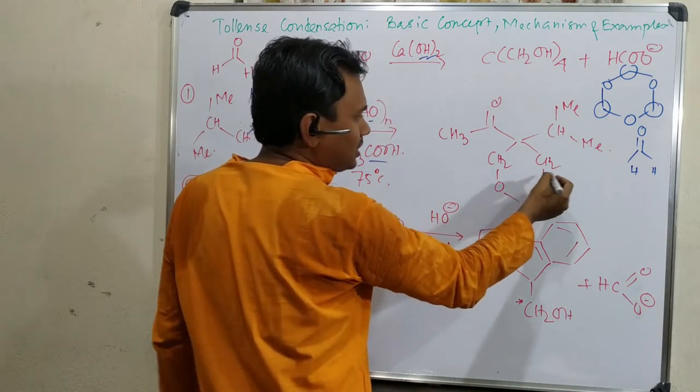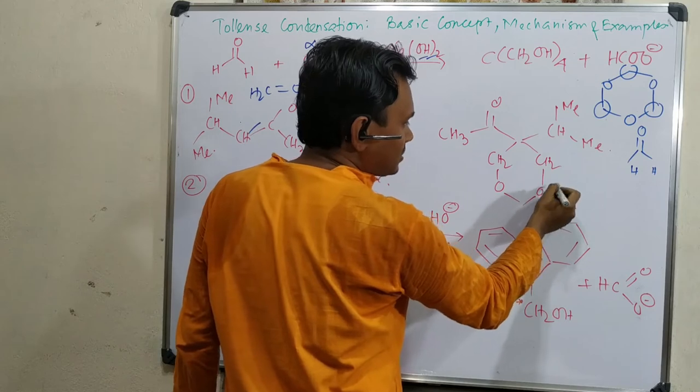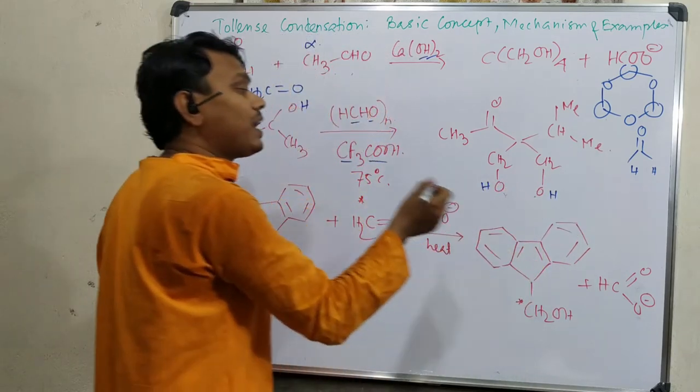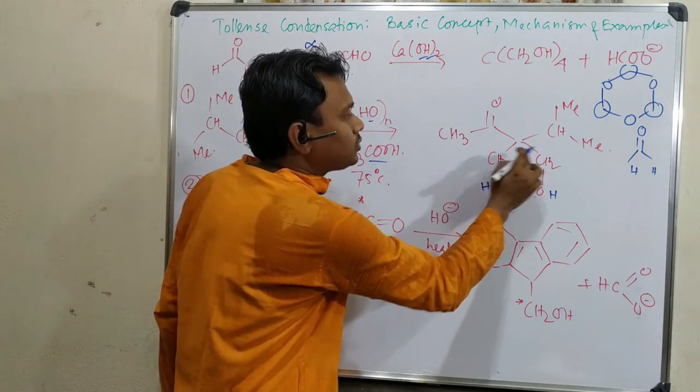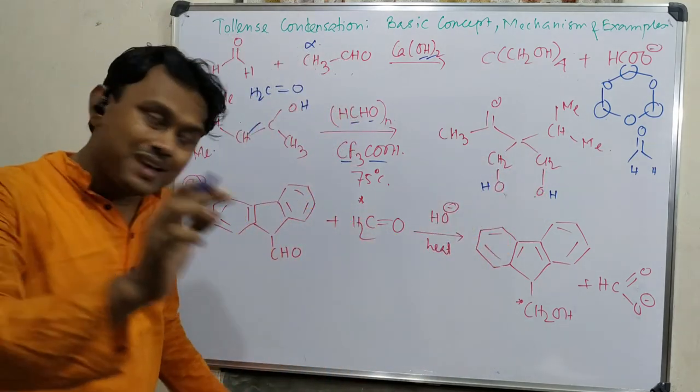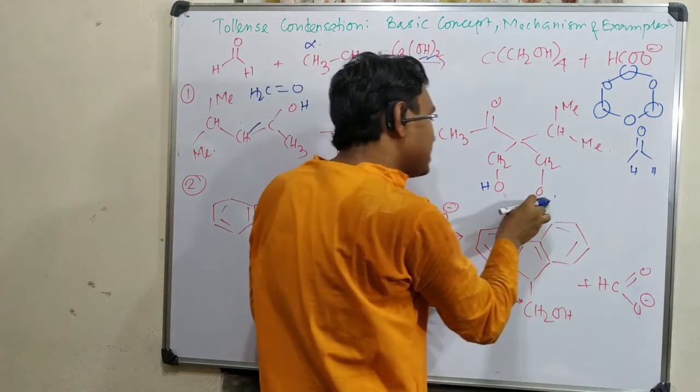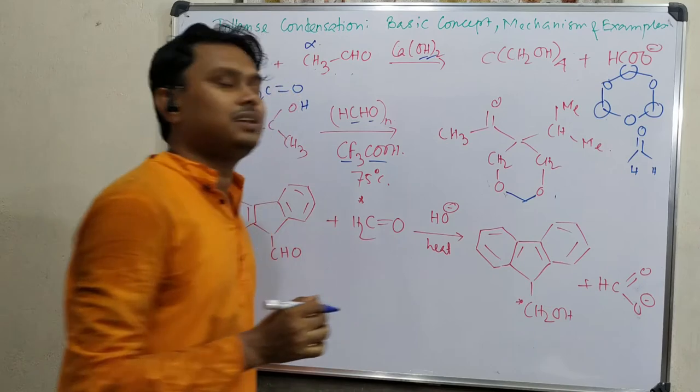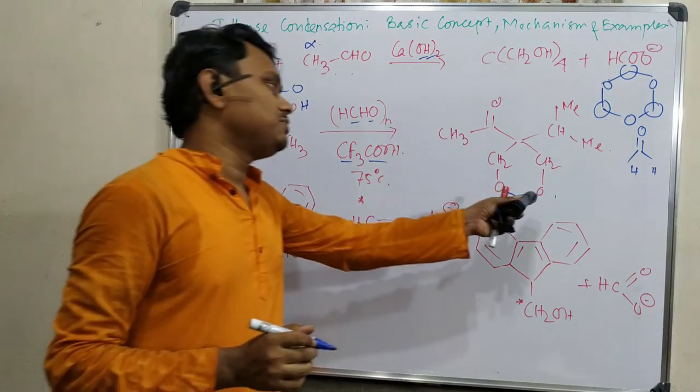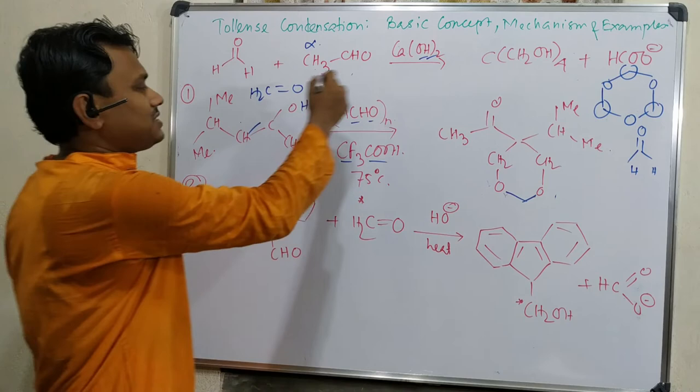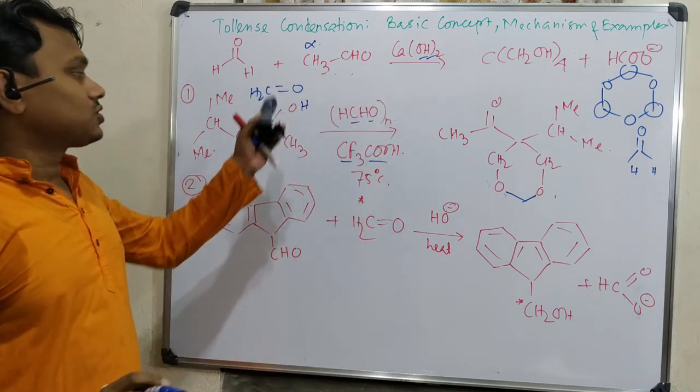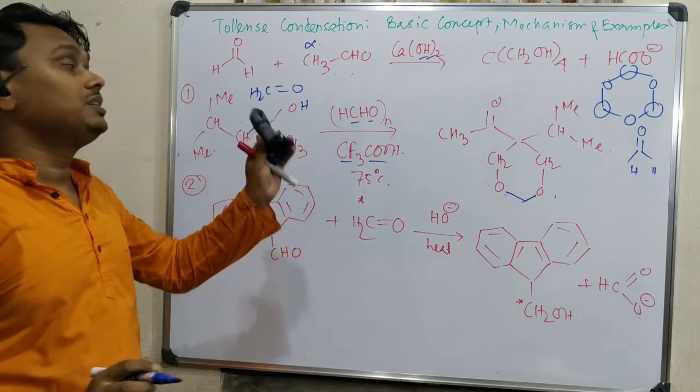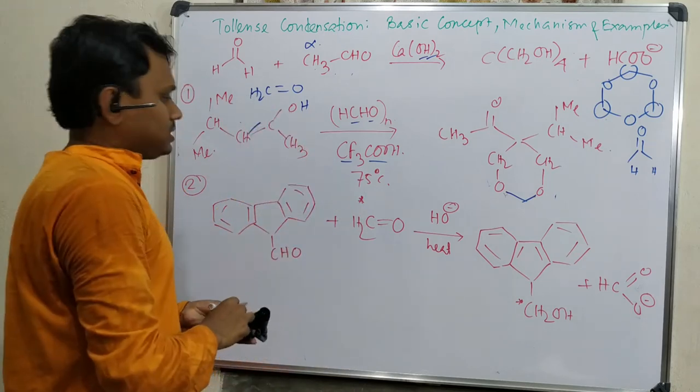But as I told that it doesn't stop at this stage. Further enolization happened and ultimately it produces, you can consider two hydroxyls are there, these are the two hydroxyls. And these two hydroxyls, you can see, three hydroxyls, so it can form acetal. And that's why this undergoes acetal formation with another formaldehyde and it results in this product. So in acid medium this acetal formation occurs. So in this way this reaction happens. So this Tollens condensation reaction not only happens in alkaline medium, can also happen in acidic condition.